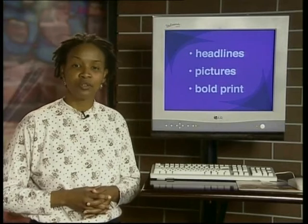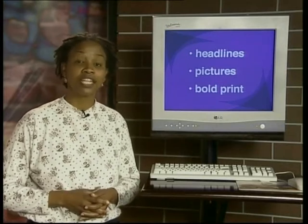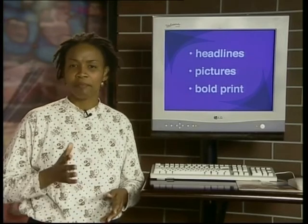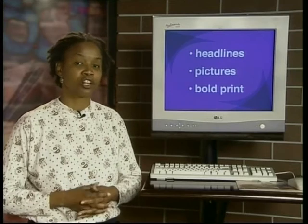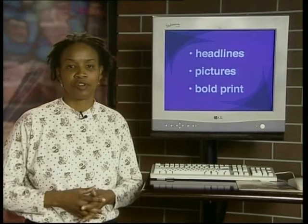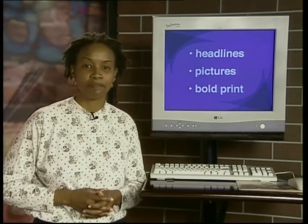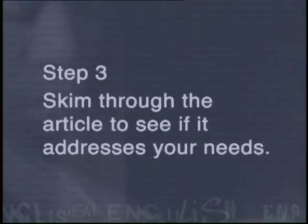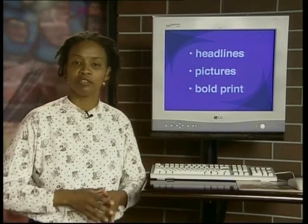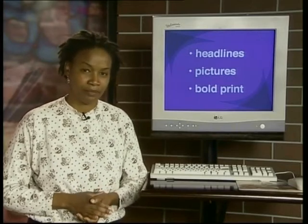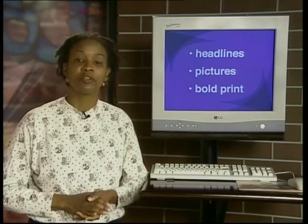Once you have found the section that interests you, it's time for Step 2: Focus on articles likely to include interesting information. If you are a soccer fan, you will ignore articles on horse racing and tennis, even though these would be found in the sports pages. You may have a favourite player whose performance you are closely following. In this case, you would scan through the articles until you find one on soccer. Step 3: Skim through the article to see if it addresses your needs. This step involves skimming through the article to see if it mentions your favourite player. If it does, then you would be ready for the next step.